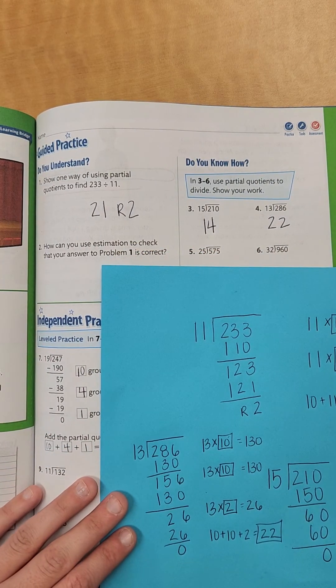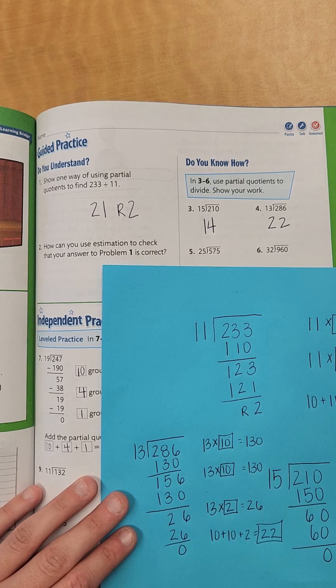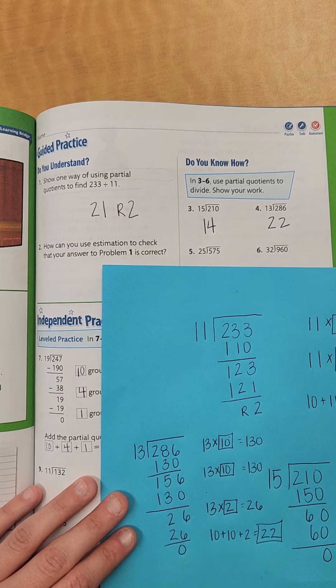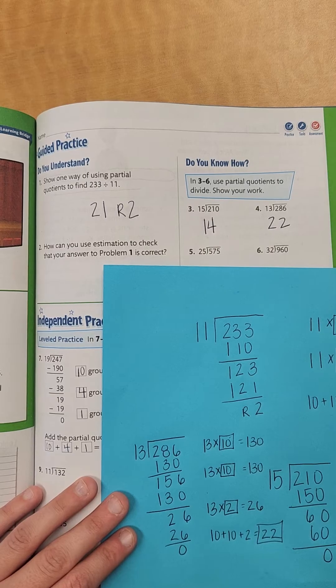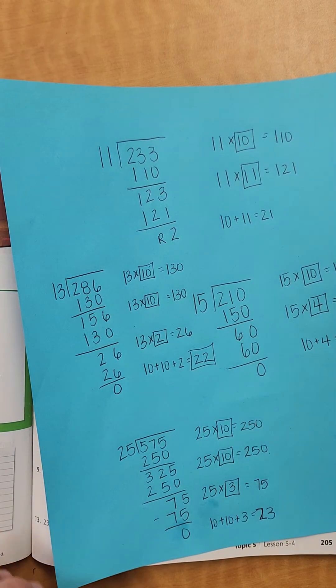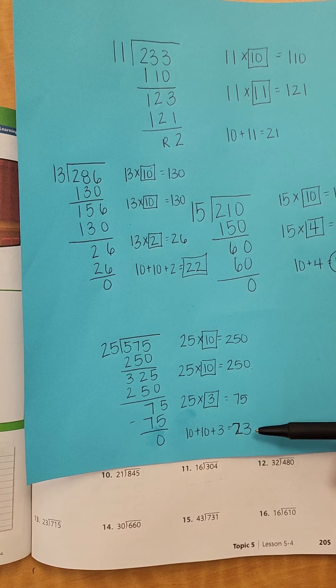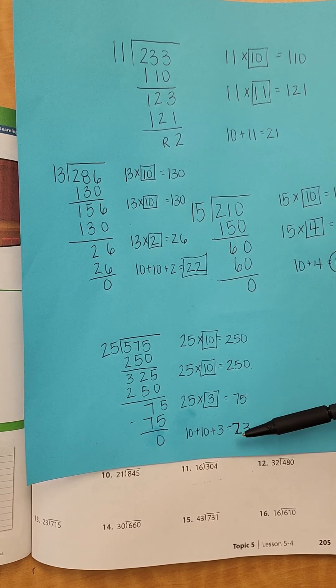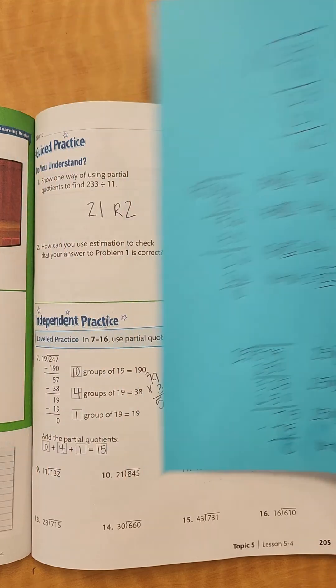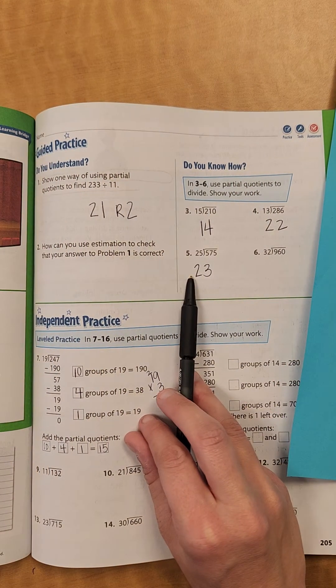Now I want you to do number 5. So I want you to pause the video, and then after you finish it, unpause it. So this is what I got. I got 23, and that's how I got my answer. So double check and make sure you did it. And then I put my answer on my blank.